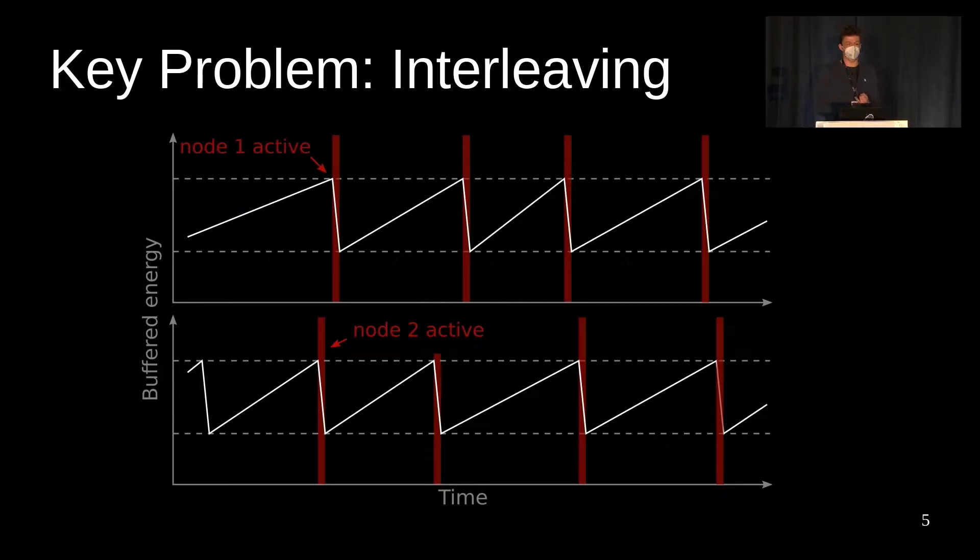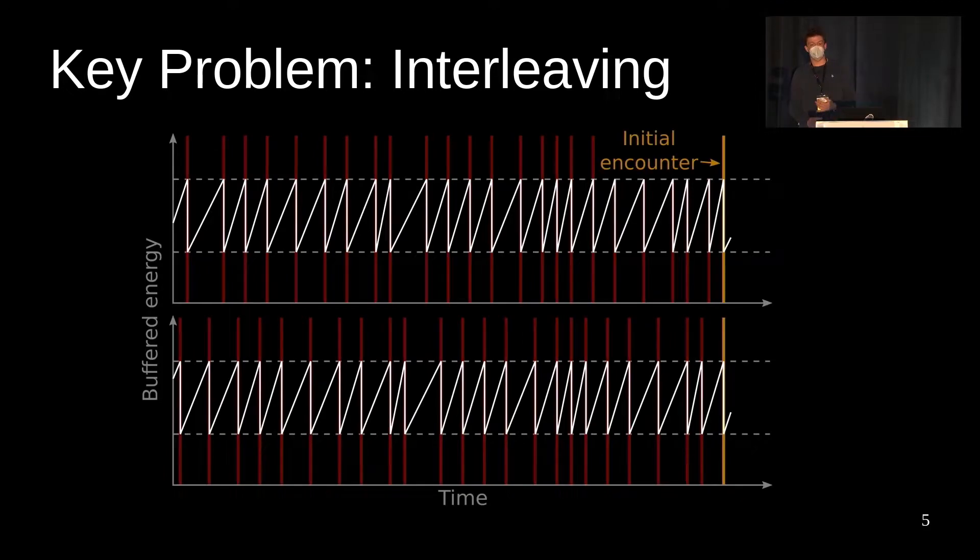Communicating between two battery-free devices is difficult because their short activity phases are generally interleaved. Here you see the execution patterns of two devices. When the device on top is active, the one on the bottom is charging and vice versa. As a result, it can take many attempts until two devices finally encounter each other.